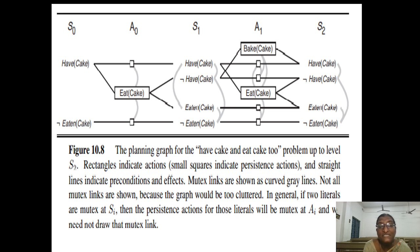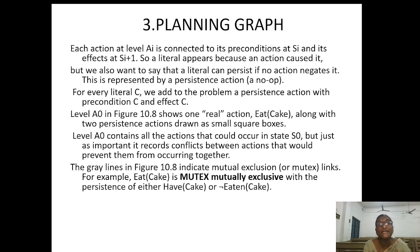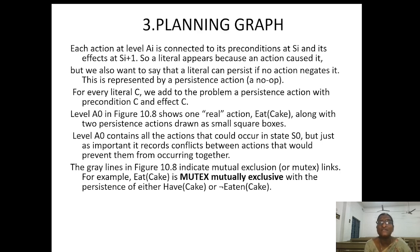Mutually exclusive means both states cannot exist at the same time — for example, 'have cake' and 'don't have cake'. In general, if two literals are mutex at SI, the persistence actions for those literals will be mutually exclusive at AI, and we need not draw that mutex link. Each action at level AI is connected to its precondition set at SI and its effects at SI+1. A literal can persist if no action negates it, represented by a persistence action or no-op.